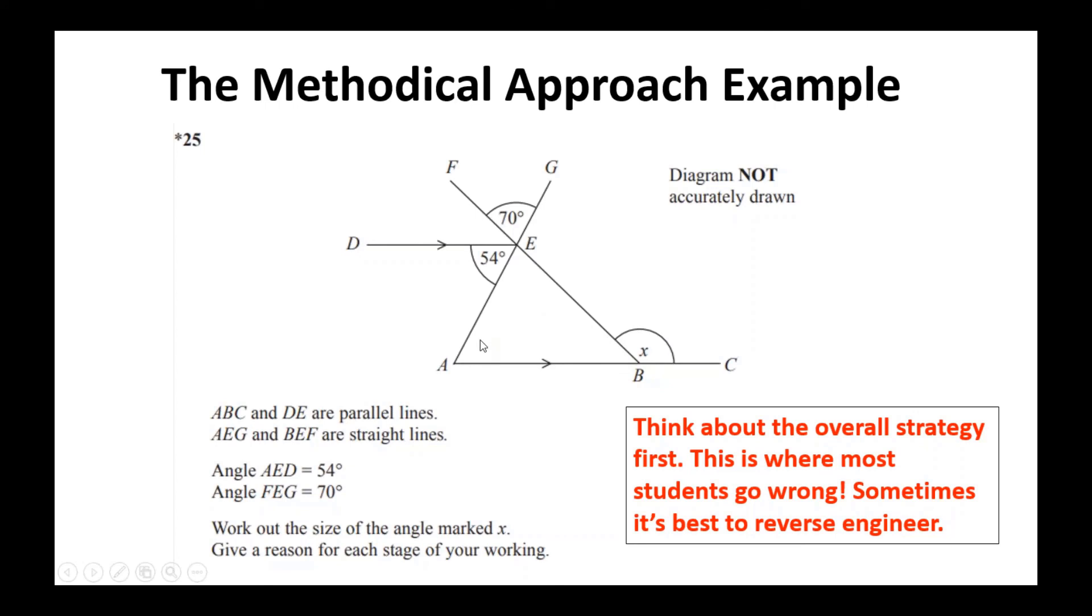I need to find these angles in a triangle. If I can find this angle here and this other angle, then obviously I can use angles in the triangle to find that one, and then we've got angles on a straight line. So sometimes it's best to actually start at the end as well - start at the end result and then work backwards.